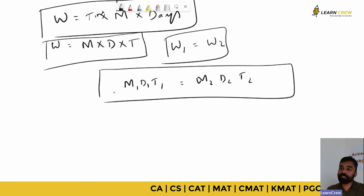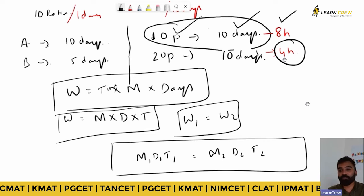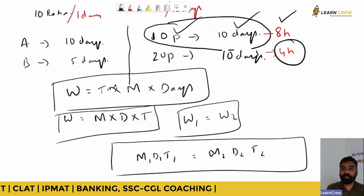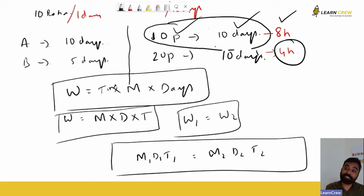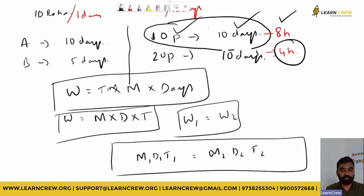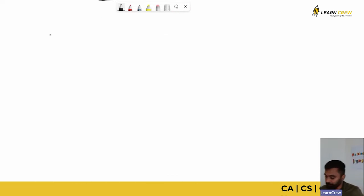This equation M1D1T1 = M2D2T2 applies when both groups are doing the same work, whether in different or the same number of days. For example, 10 people working 10 days at 8 hours equals 20 people working 10 days at 4 hours — work done is same. There may be scenarios where work done is different, but those problems mostly won't appear.